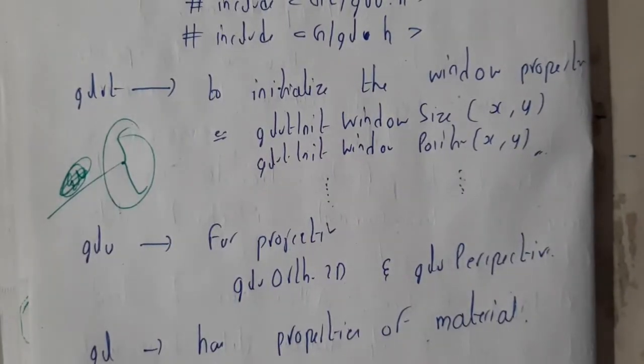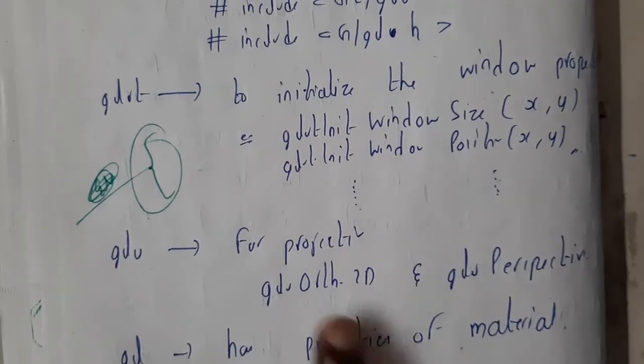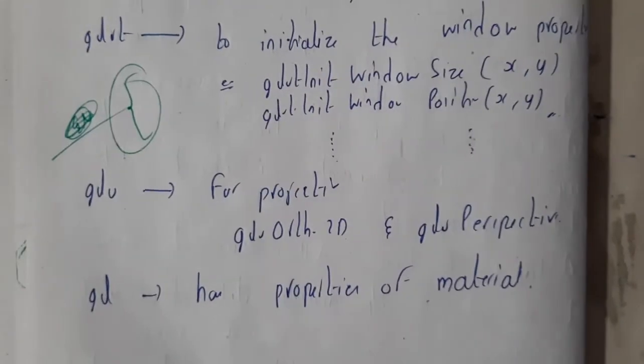GLU is for specifying in which projection or view you want to view - GLU ortho 2D, GLU perspective like that.